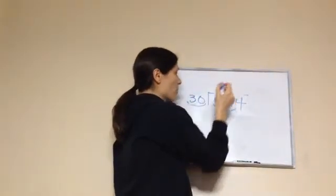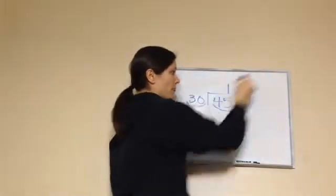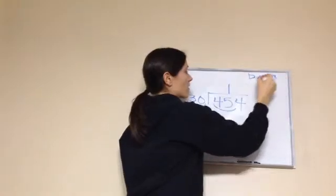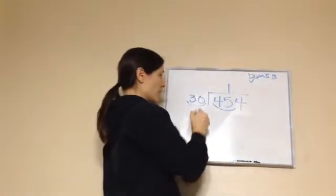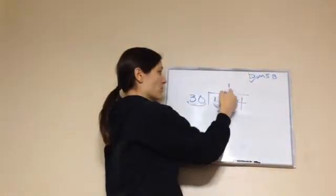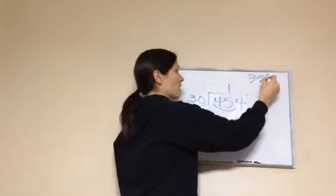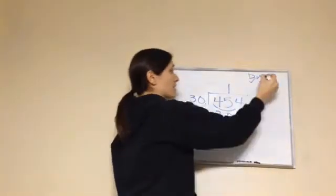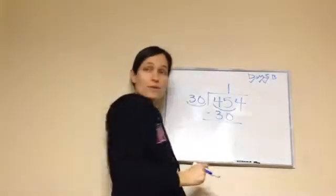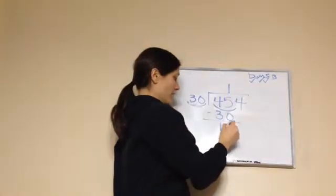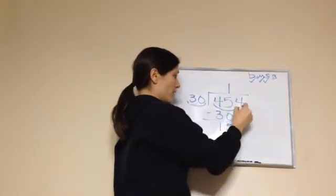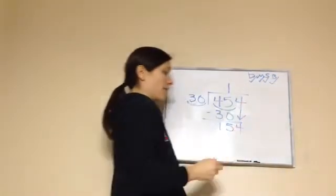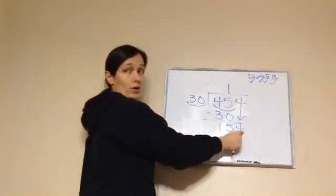30 times 1 — let's do Dad, Mom, Sister, Brother. Divide: 30 times 1 is 30. Multiply that. Now subtract: we get 15 under here. Bring down the 4. Now 154 is our new number.